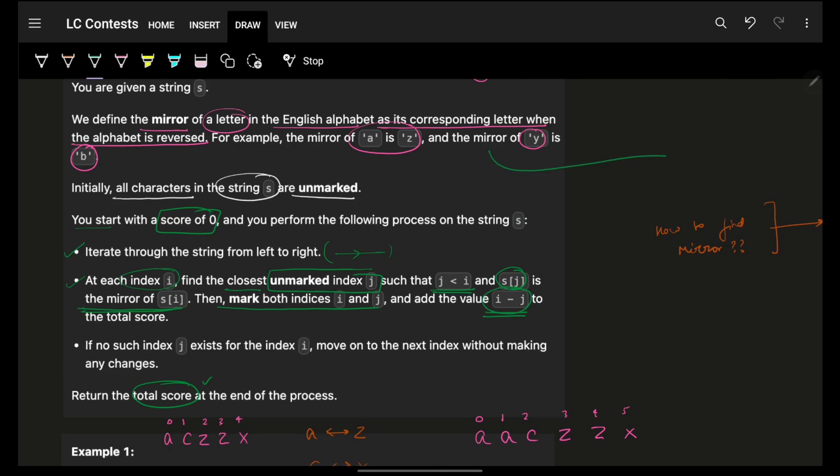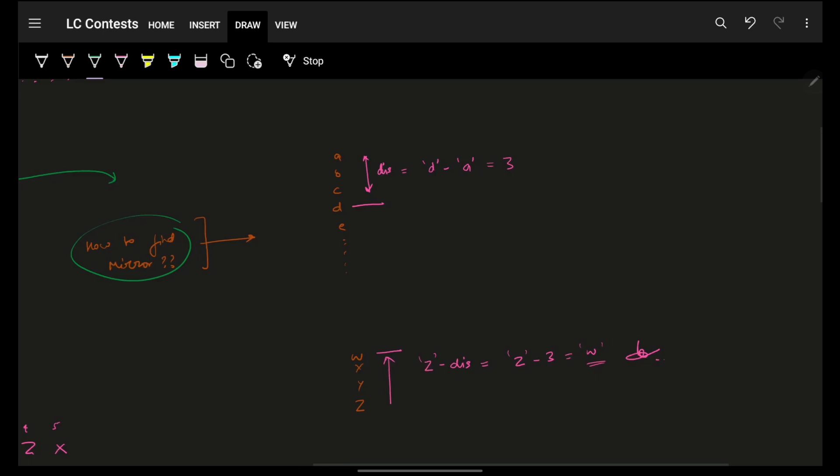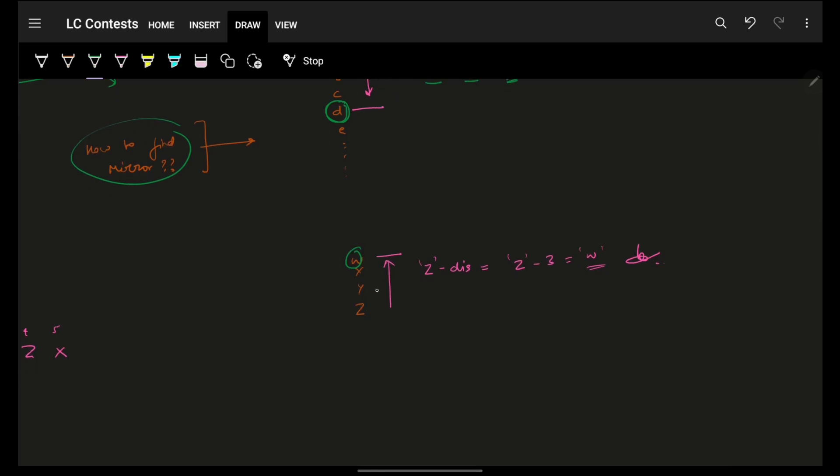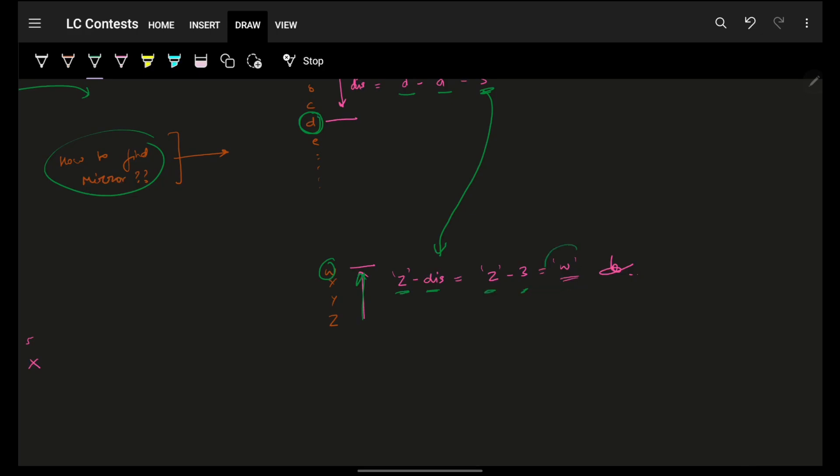And also, J is less than I, which means J has occurred previously before. And also, S of J is the mirror of S of I. Then mark both the indexes. And the score which you add will be I minus J. Ultimately, give the corresponding total score in the end. First thing first in this, how will you figure out mirror easily? If you very easily see, I just simply wrote A to Z. D is an element.